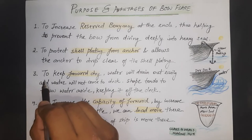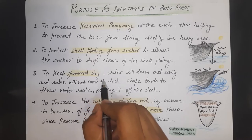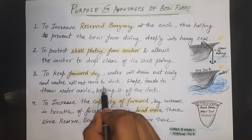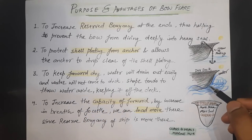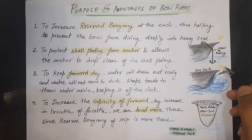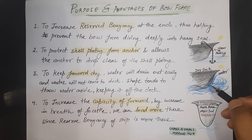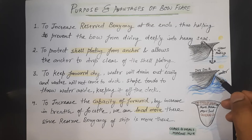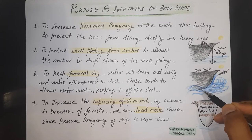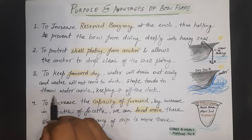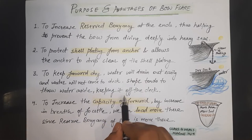The third advantage is to keep the forward deck dry, because water will drain out easily and will not come onto the deck. Since the flare is provided here, in case of heavy seas or water splashing, the water will not come on the deck because of the shape. If water comes to this part, it will glide and slide back to the sea, thereby the deck will always be dry. The shape tends to throw the water aside, keeping it off the deck.